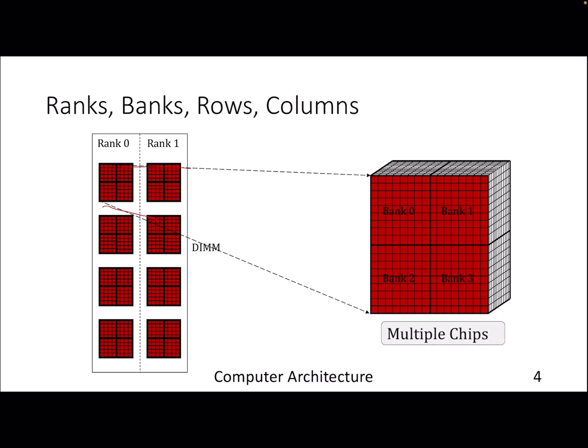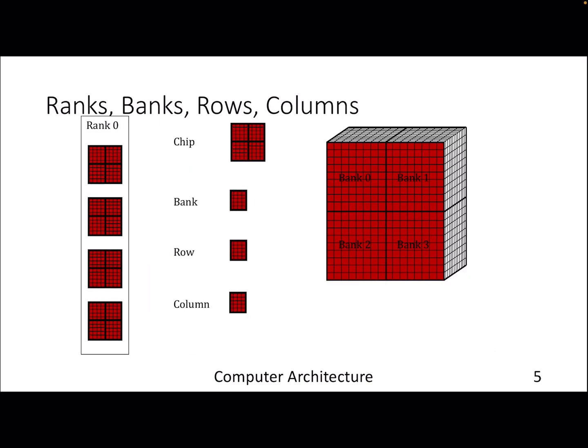One key thing to remember when talking about rank containing multiple chips and a chip containing multiple banks: there is a terminology called the width of a particular DRAM device. Whenever you get a cache miss, the request goes through this hierarchy of rank, bank, rows, and columns, and finally the DRAM will respond with data.